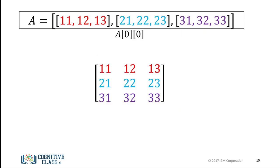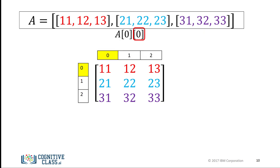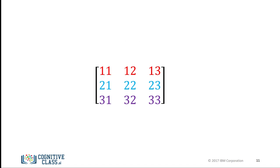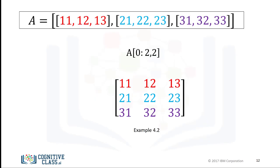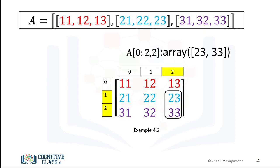Consider this example. This index corresponds to the first row, and the second index corresponds to the first column, giving a value of 11. We can also use slicing in NumPy arrays. The first index corresponds to the first row and the second index accesses the first two columns. Consider this example: the first index corresponds to the last two rows, and the second index accesses the last column.